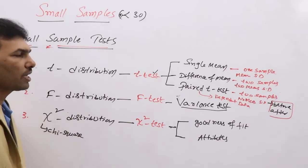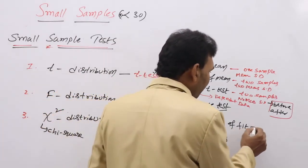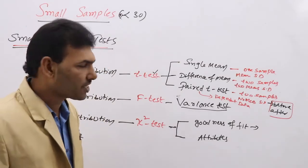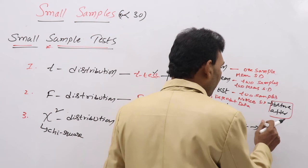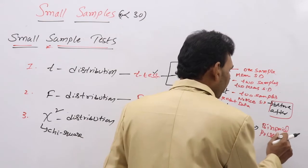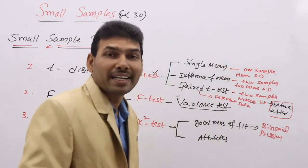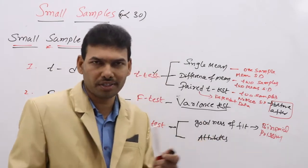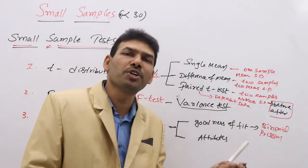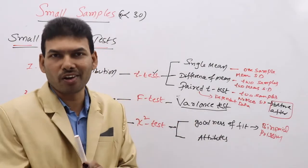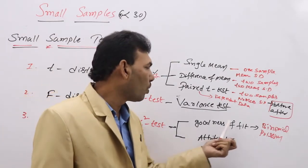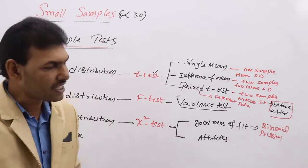Coming to chi-square test — goodness of fit. We discussed fitting binomial and Poisson distributions in probability. Now the question is whether the fitting is good or not — 'test whether the following binomial distribution is fitted correctly' or 'test whether the following Poisson distribution is fitted correctly.' Then we go for goodness of fit test in chi-square.